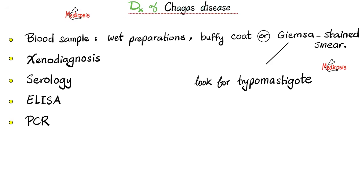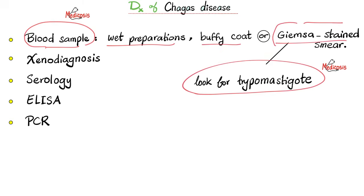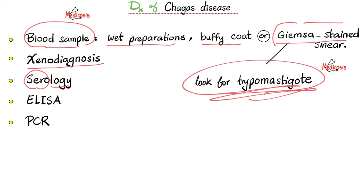How can we diagnose Chagas disease? Obtain a blood sample and perform wet preparations, buffy coat, or Giemsa stain. In the peripheral smear, you're looking for trypomastigotes of Trypanosoma cruzi. Next, xenodiagnosis — 'xeno' means foreigner, performed in a different body. Serology — the scientific study of the serum. ELISA and PCR can help clinch the diagnosis.